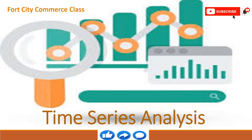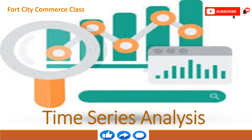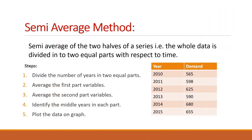In this video, I am dealing with another method in time series analysis to measure the trend — that is the semi-average method. As the name tells, semi means half. The whole time series data is divided into two equal parts and then the average is calculated for each part. That's why it is called the semi-average method.